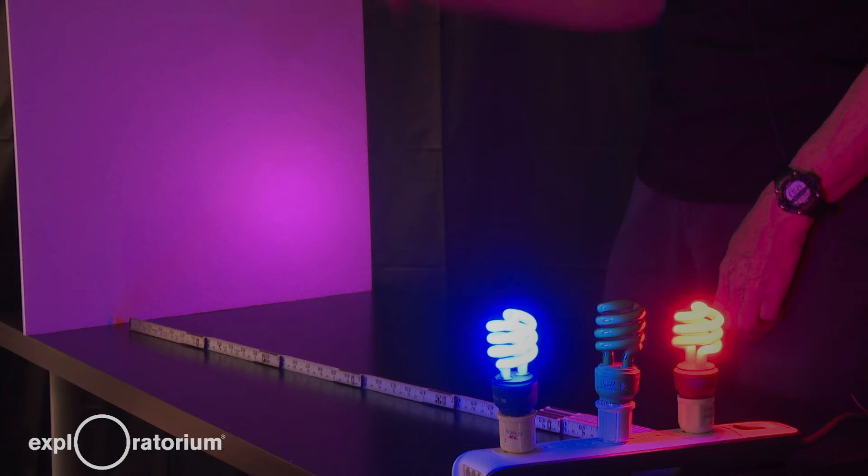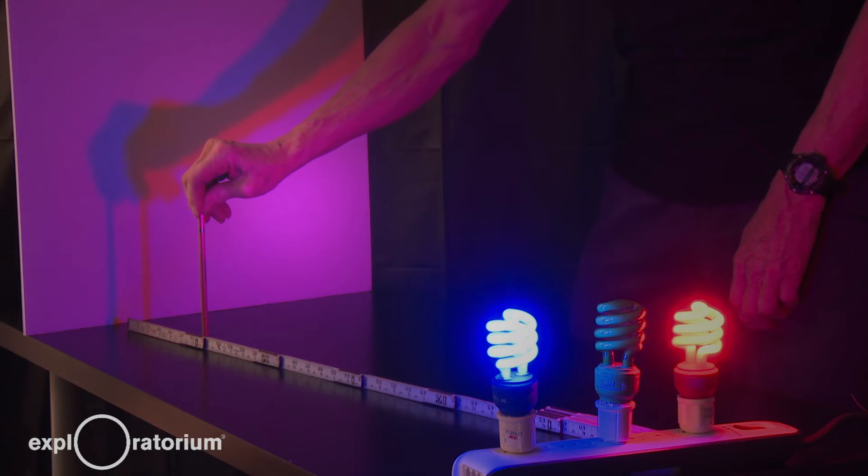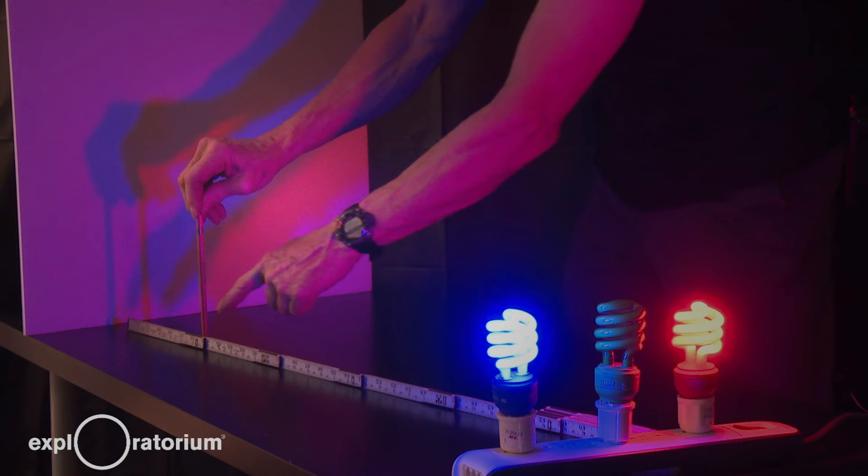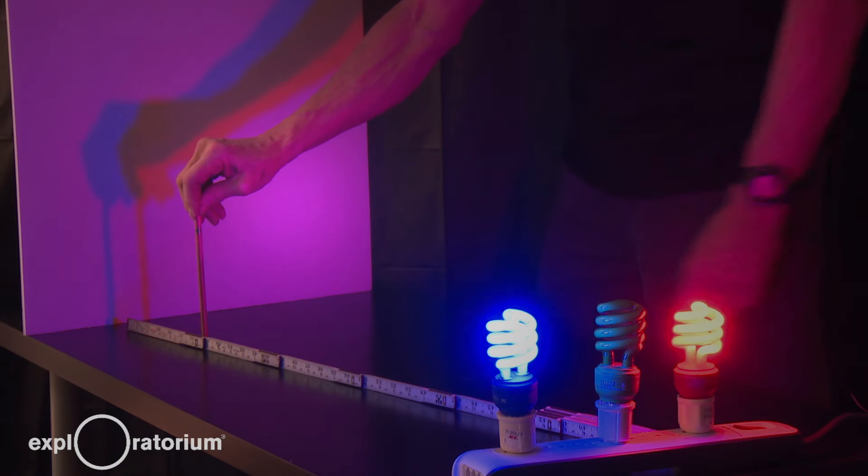Of course, light from the red bulb hits everywhere on the screen, traveling in straight lines. However, along this path, if I put the pencil there, the pencil blocks the light traveling in the straight line along the ruler and makes a shadow on the wall.